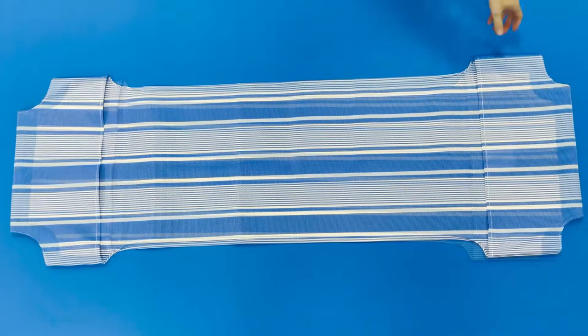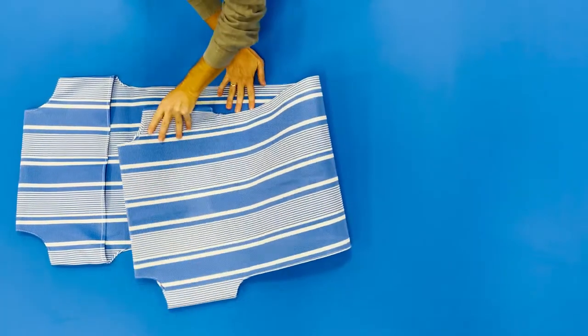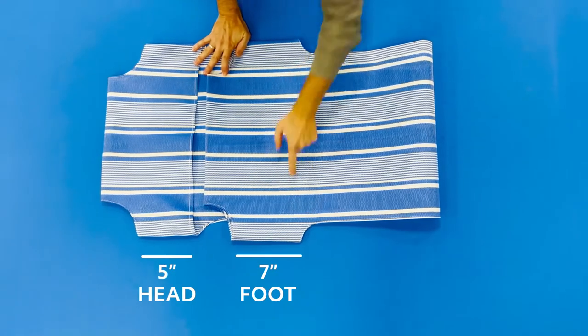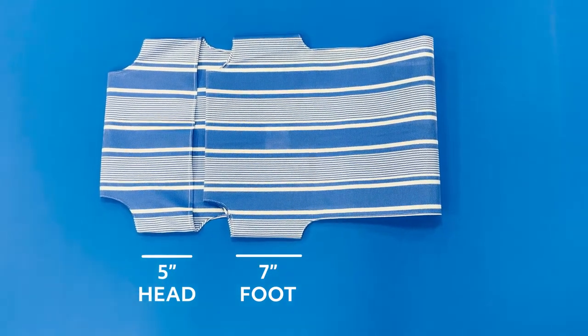If the head and foot pockets are not labeled on your fabric lounge seat, fold the fabric over to see the head pocket seam measures five inches and the foot pocket seam measures seven inches.